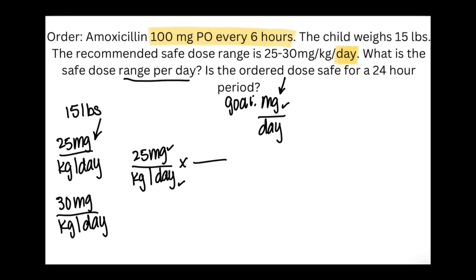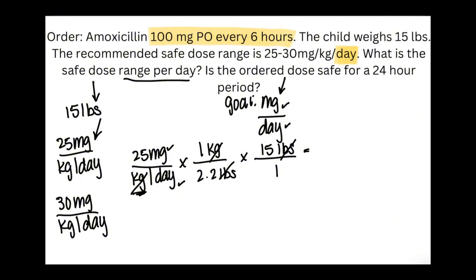We have day at the bottom. Kilograms is not part of the goal, so it has to be canceled out, and we have pounds. We'll use the conversion: 1 kilogram equals 2.2 pounds, placing kilograms on top so they cancel out. Then I put 15 pounds over 1, and pounds cross out. Multiplying the numerator: 25 times 15 equals 375. The denominator: 1 times 2.2 equals 2.2. Dividing 375 by 2.2 gives 170.5 milligrams per day, rounded to the tenths place.